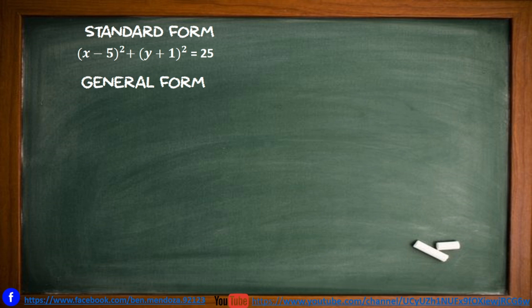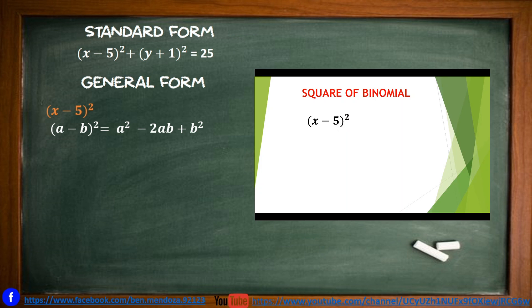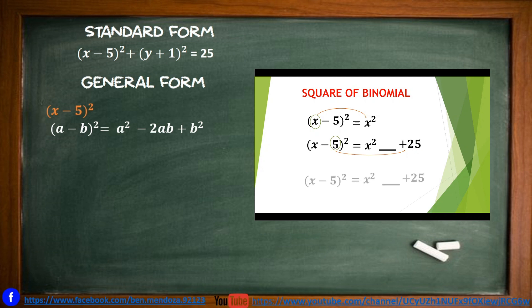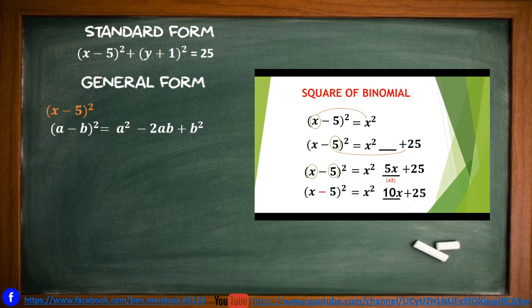We begin with the quantity of x minus 5 squared by applying the square of a binomial. Square of the first term: x squared. Square of the second term: 25. Getting the product of the first and second term: 5 times x is 5x, doubled gives 10x as the middle term. The sign of the middle term is negative.